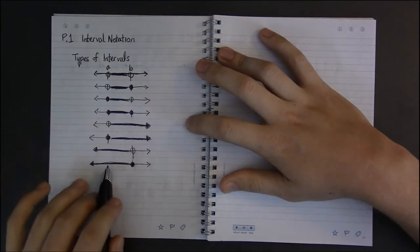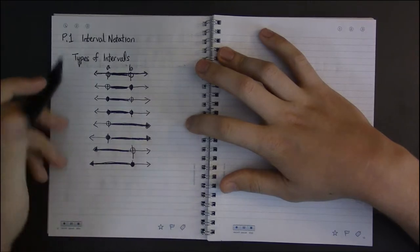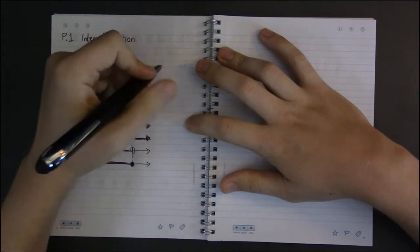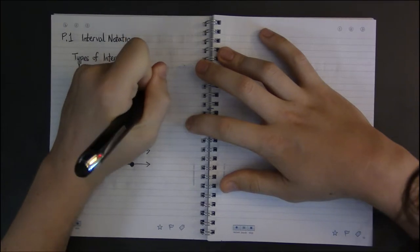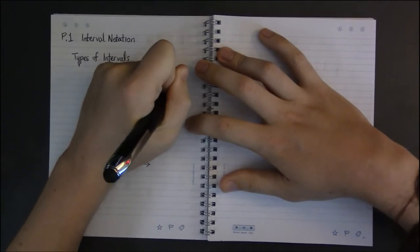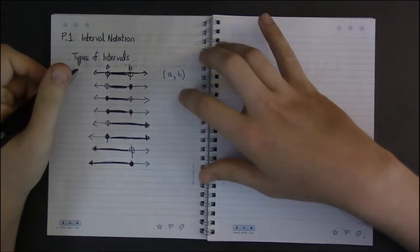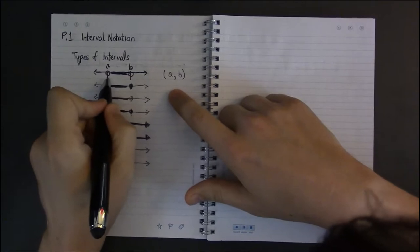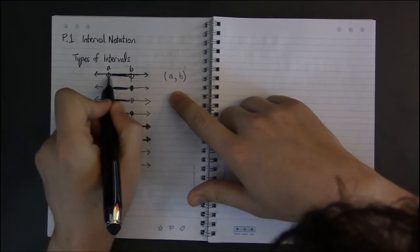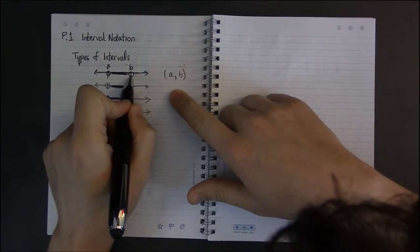Interval notation is often used mathematically, but there is an alternative. For example, the interval notation for what we call an open interval, where neither a nor b is included but everything in between is, is simply parentheses a comma b closed parentheses.